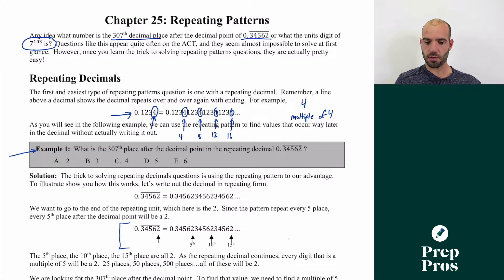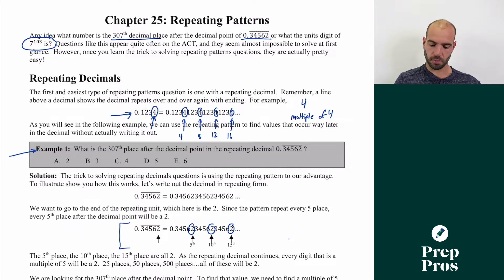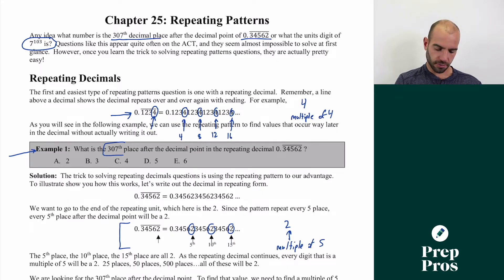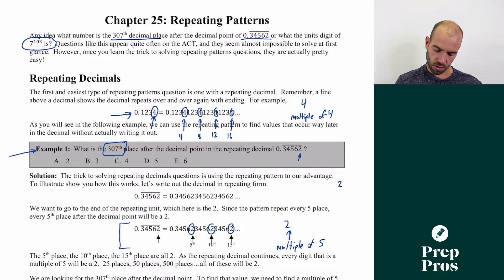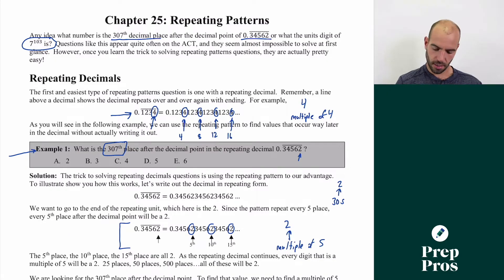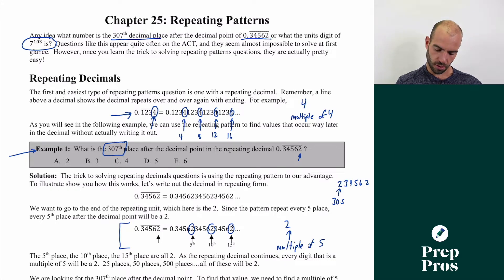The pattern goes 0.34562 over and over again. Every time we get to a two, it's going to be at a multiple of five. So I want to find a multiple of five near 307. That's 305. So there's going to be a two at the 305th digit after the decimal point. From there we just keep writing the pattern out: it goes three, four, five, six, two, then repeats. If 305 is a two, we count forward: 306 is a three, 307 is a four. That's how we solve example one.